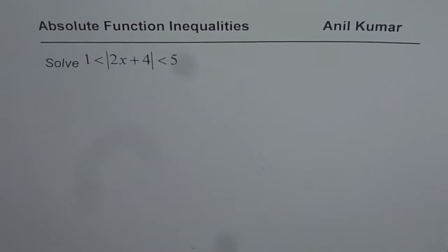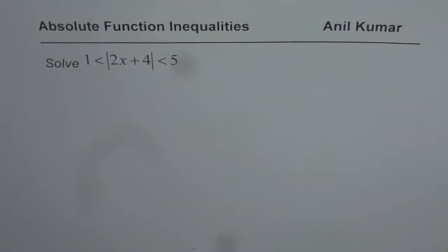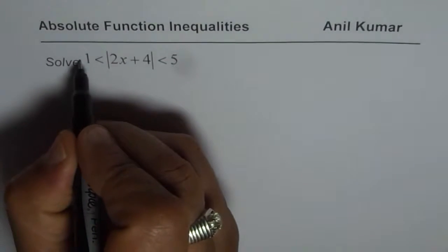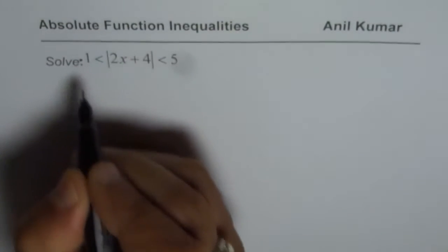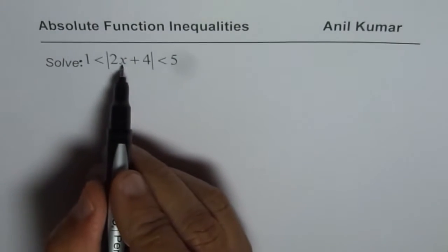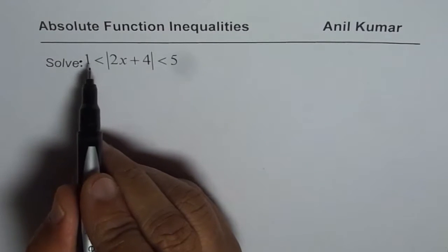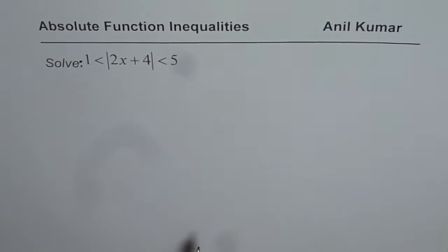I'm Anil Kumar, sharing with you the solution of an absolute inequality. The question is: solve when absolute value of 2x plus 4 is between 1 and 5.